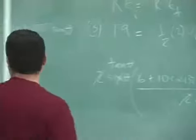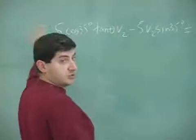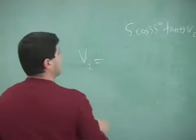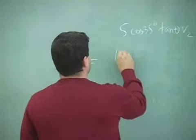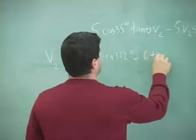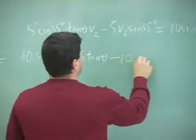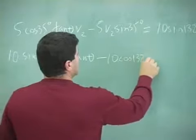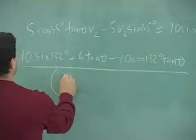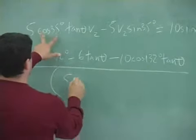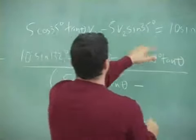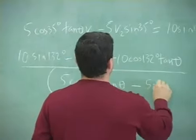Because my goal is now to factor out the V2 so that I can have an expression, this monstrous looking expression: 10 sine of 132 minus 6 tangent theta minus 10 cosine of 132 tangent theta divided by this thing. I factored this out, 5 cosine of 35 tangent theta minus this thing, 5 sine of 35.